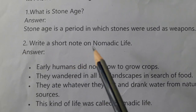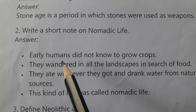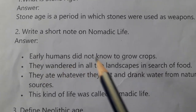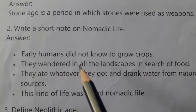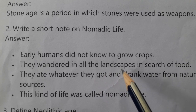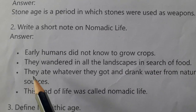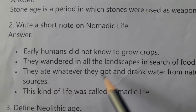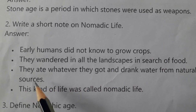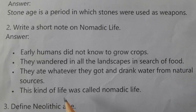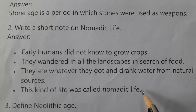Second question: Write a short note on nomadic life. Answer: Early humans did not know how to grow crops. They wandered in all the landscapes in search of food. They ate whatever they got and drank water from natural sources. This kind of life was called nomadic life.